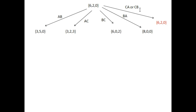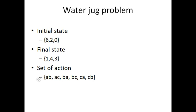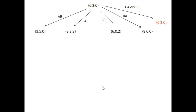This is a very important point. Applying action CB will generate the same state as before because jug C has 0 liters of water — there is nothing to move. That is why I have marked it in red color.